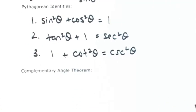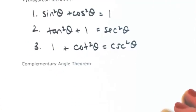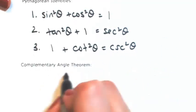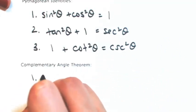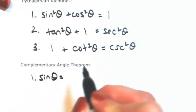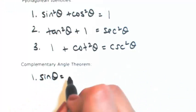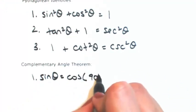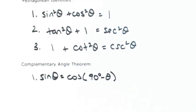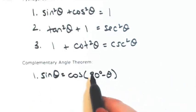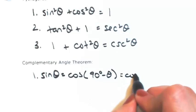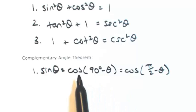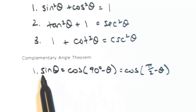The next set of identities comes from the complementary angle theorem. Complementary means two angles add up to 90 degrees. So the sine of theta — its co-function is cosine, and the complementary of theta is 90 minus theta, or Pi over 2 minus theta in radians.